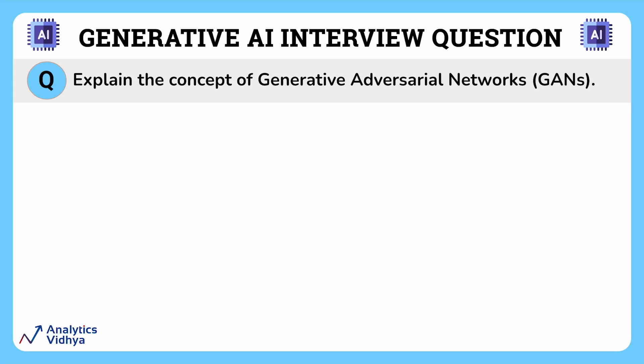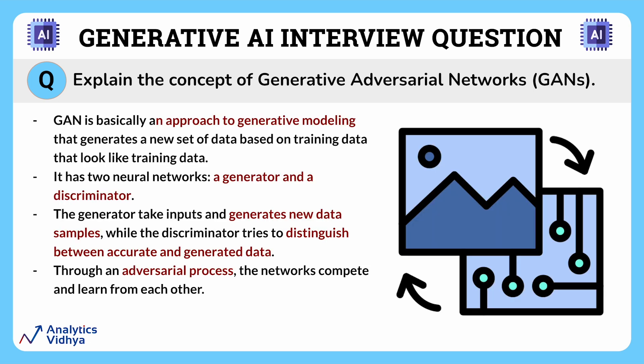This is another very common question in this domain: explain the concepts of GANs, or Generative Adversarial Networks. A Generative Adversarial Network is an approach to generative modeling that makes a new set of data based on training data that looks similar to it.